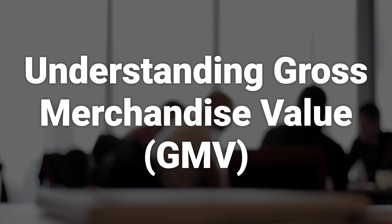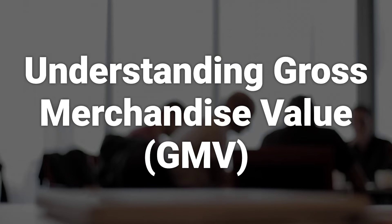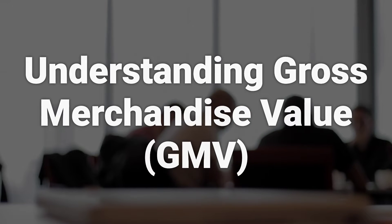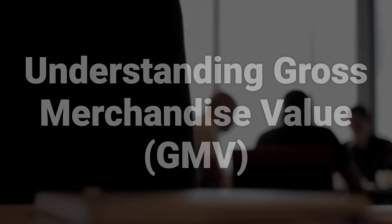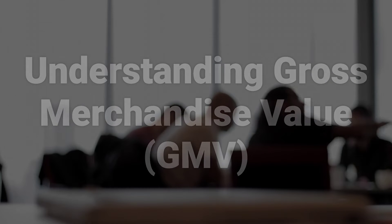To calculate GMV, simply multiply the number of goods sold by the sales price of the goods using the formula: GMV equals sales price of goods multiplied by number of goods sold.